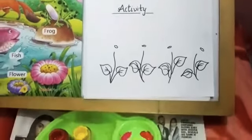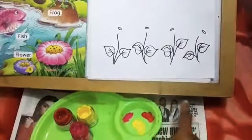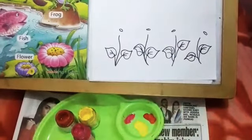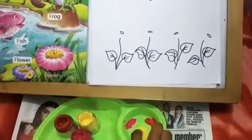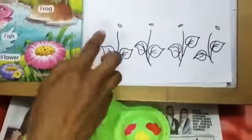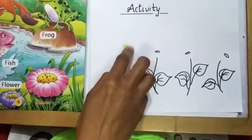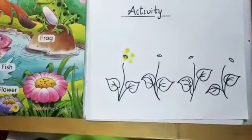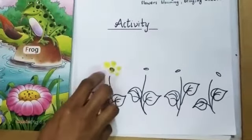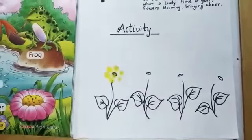Here, dekho, maine ye poster color liye hain. Aur main ab isse finger printing karungi aur flower banaungi. Ye main pehle yellow color ka flower le rahi hun. Is tarike se. Iske middle mein hum is tarike se lagayenge. Aap sab ko bhi is tarike se apne ghar mein activity karni hai.